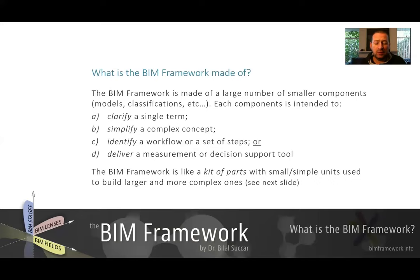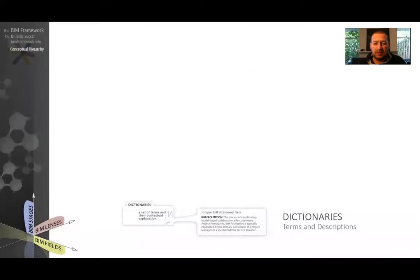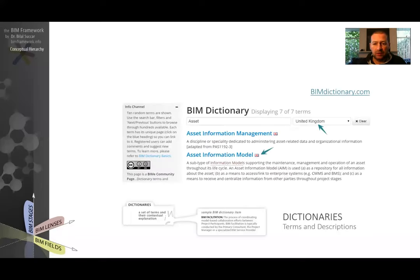Think of the framework as a collection of parts. These parts start at the simplest form as a term with a description — we call this a dictionary. Any kind of term, for example, a term called 'BIM facilitation' with a description — together with other terms they form a dictionary. The BIM Framework includes lots of terms, and currently all of these terms are collected on something called the BIM Dictionary, which you can find on BIMDictionary.com. In the BIM Dictionary, these terms have attributes that could be applicable to a certain country, etc. I invite you to visit BIMDictionary.com and have a look.